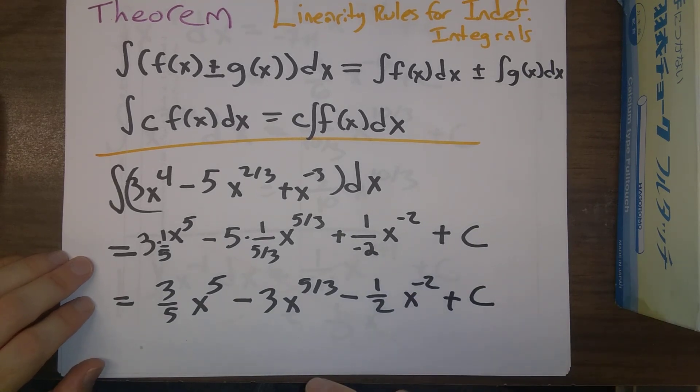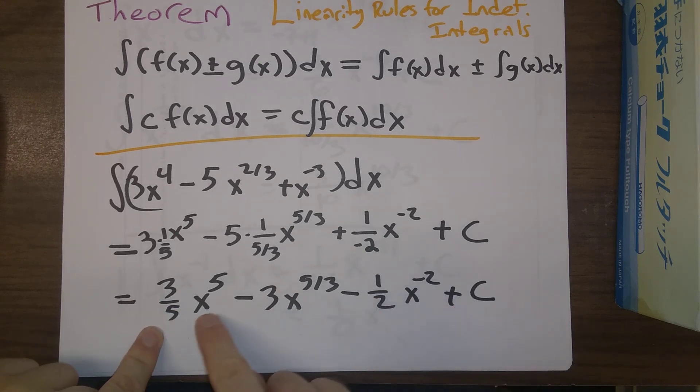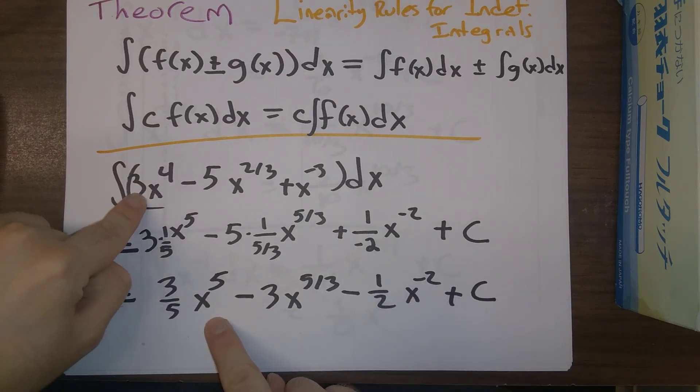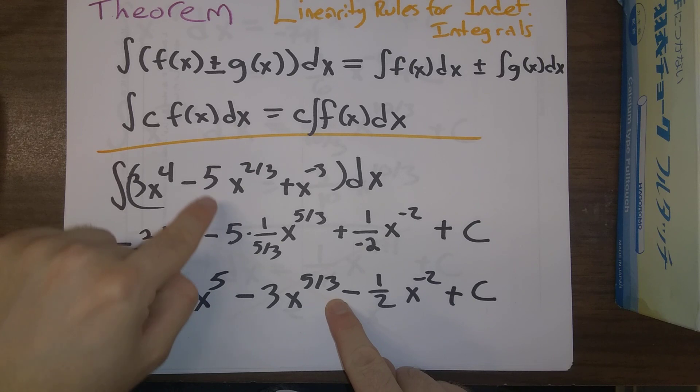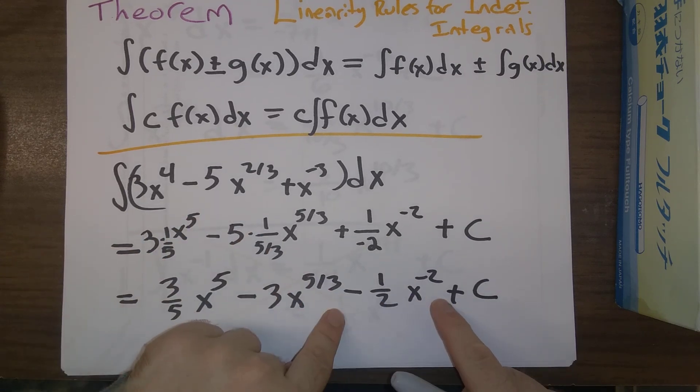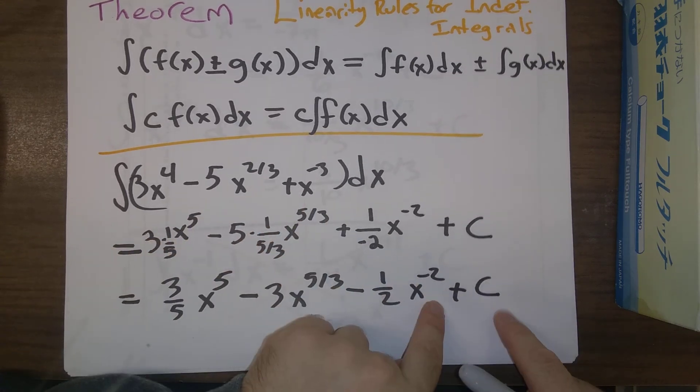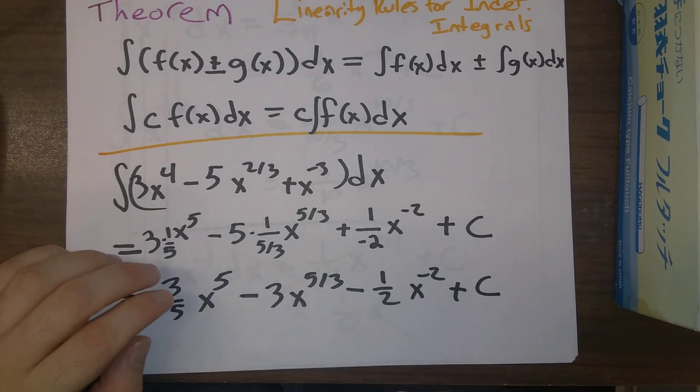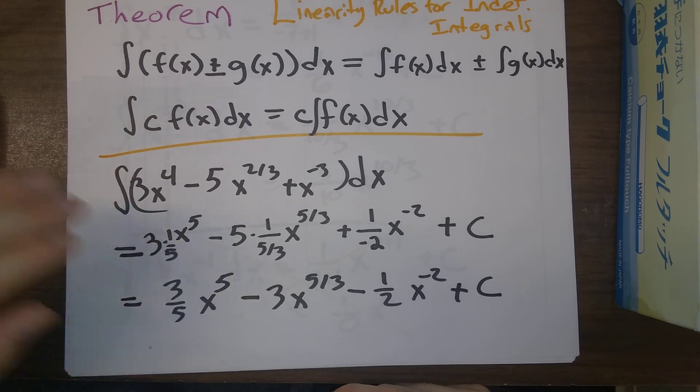And you can check for yourself that if you take the derivative of this, the derivative of this term gives you three x to the fourth, the derivative of this term gives you minus five x to the two-thirds, the derivative of this term gives you x to the minus three, and the derivative of our constant is zero.